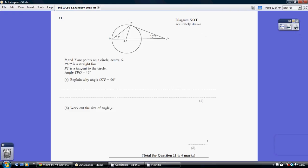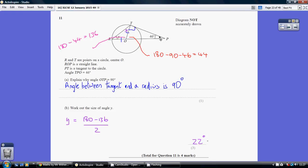Well, the reason for this is that the angle between a tangent, and if you picture P going to T and carrying straight on, that is just skimming the circle. That is a tangent. The angle between a tangent and a radius is 90 degrees. That's one of the circle theory rules.